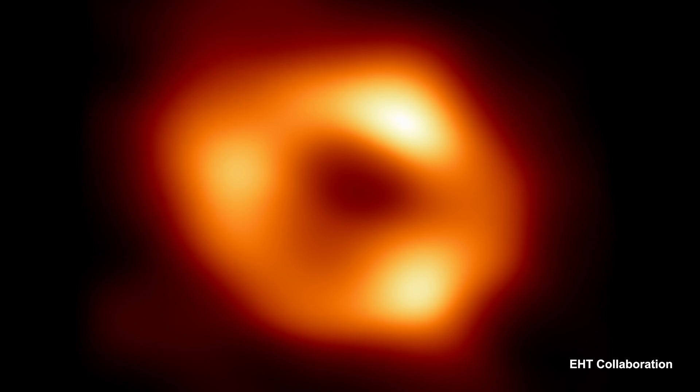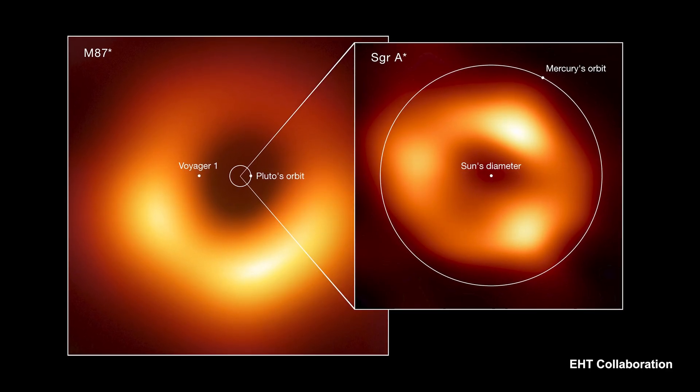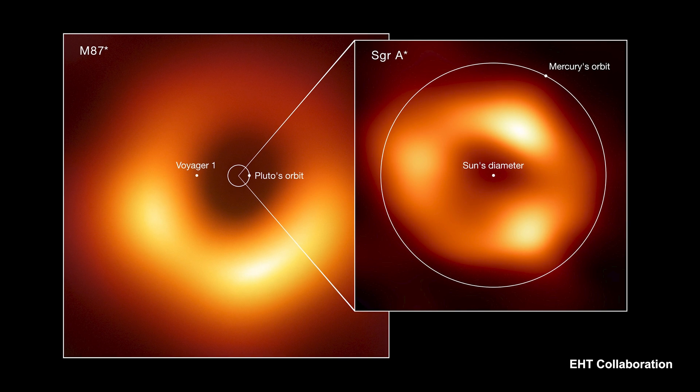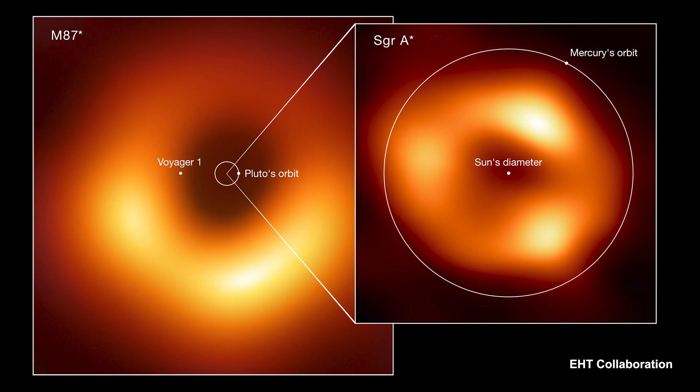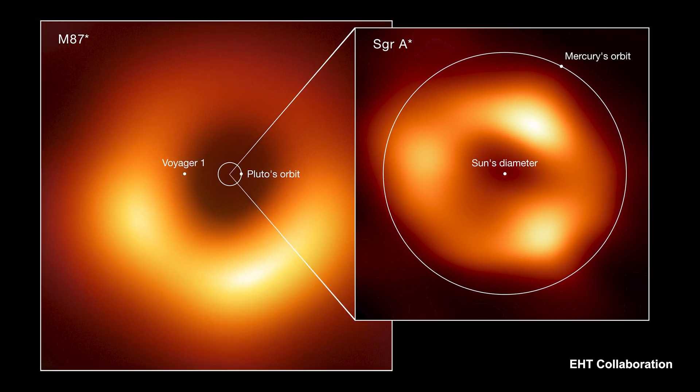The stuff that you see which is brighter is actually hotter — it corresponds to hotter material. This is the second black hole that we've ever imaged. Back in 2019, three years ago, we showed the world the first image of a black hole — the supermassive black hole in the galaxy M87. There were two major challenges unique to this image that we didn't have to deal with for M87. The first was that this black hole is actually a lot smaller — about a thousand times smaller in mass — meaning things happen a thousand times faster, on timescales of seconds to minutes rather than hours to weeks.